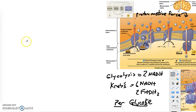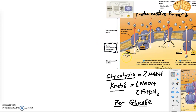Glycolysis occurs outside of the mitochondria in the cytoplasm, so those NADH have to get shuttled inside the mitochondria. The Krebs cycle occurs in the matrix, so those are already there ready to go. The electron transport chain occurs within the inner mitochondrial membrane, with things taking place on both sides - in the intermembrane space and in the matrix. Further out would be the cytoplasm.